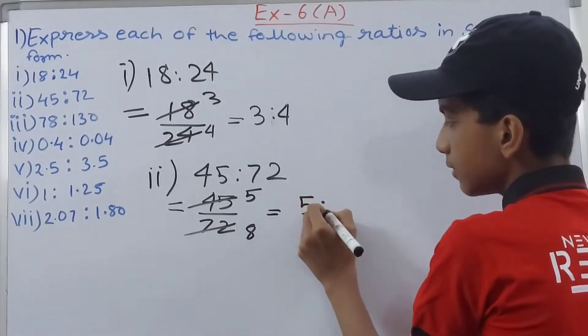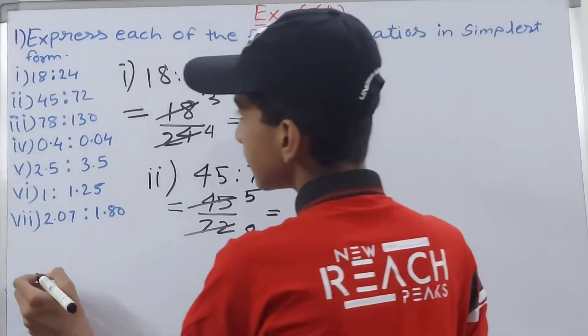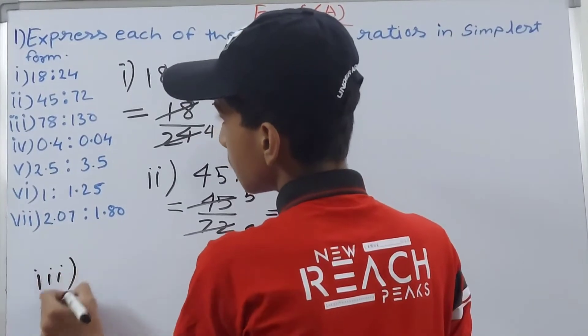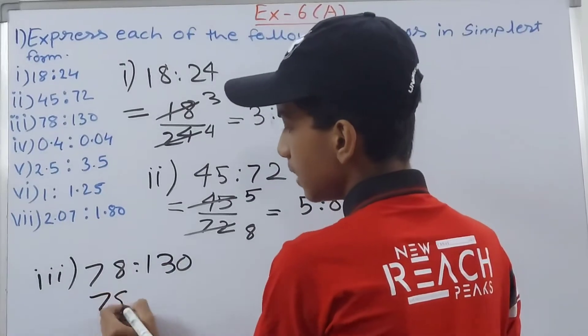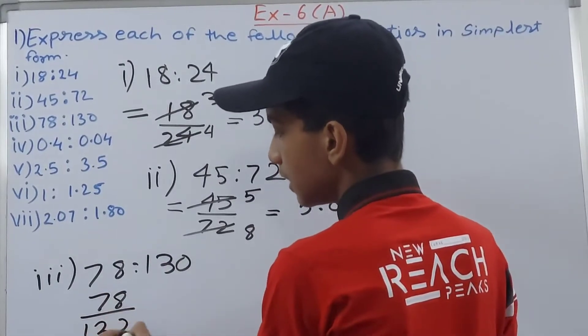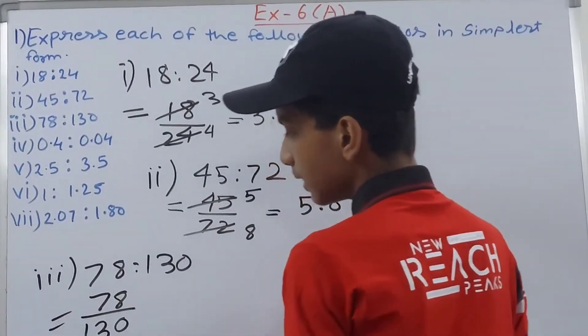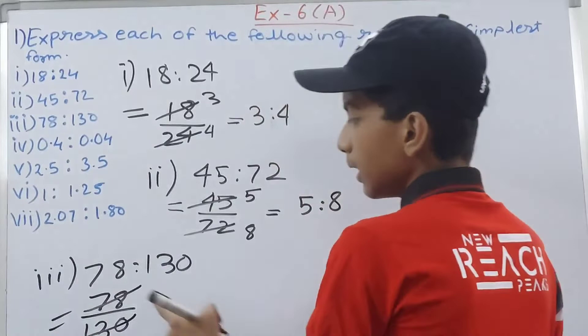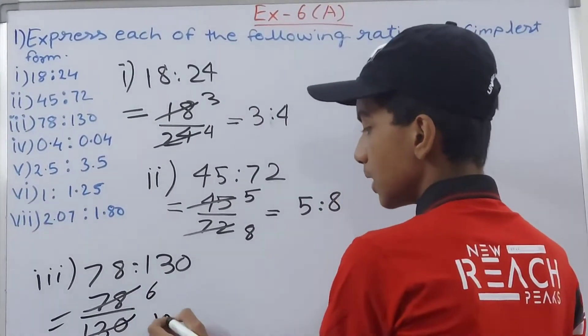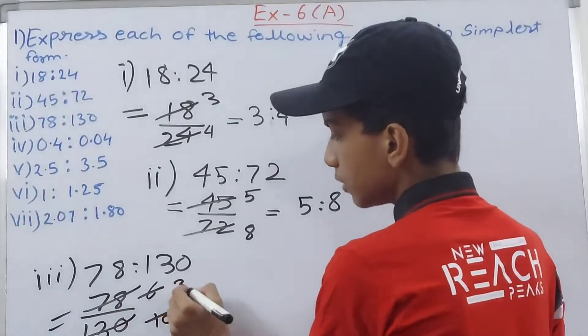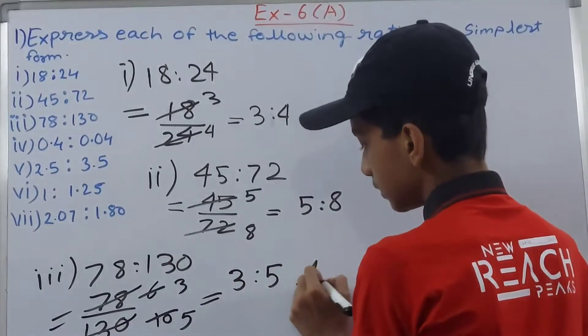Then third part says 78 is to 130. So we'll have 78 upon 130 and so cancel this by—what can we cancel this by? 13. This 78 goes 6 times by 13 and this 13 goes 10 times. Now by 2, so 3 and 5. So we will have 3 is to 5 is our answer.